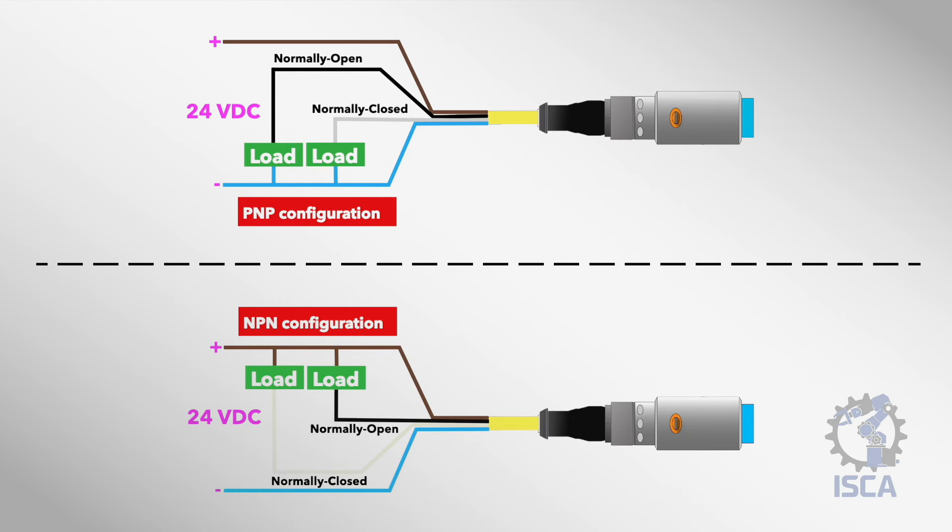Capacitive sensors can have either PNP or NPN output signals. The choice of which type of output is needed depends on how the sensor will be connected to a PLC.